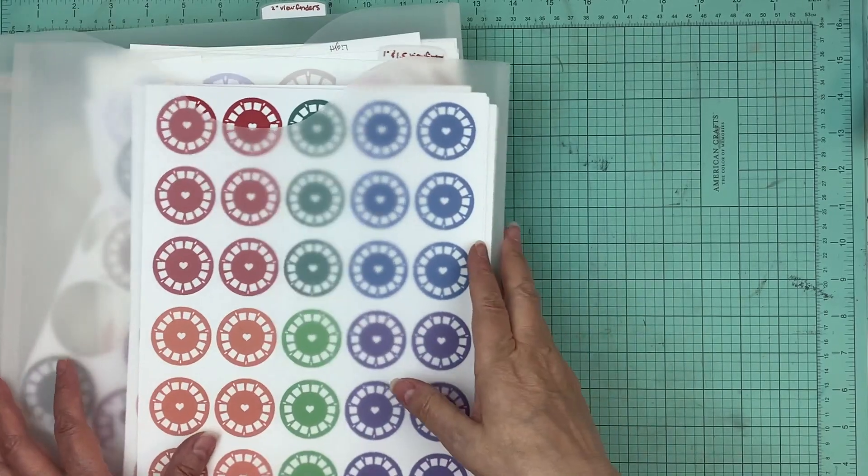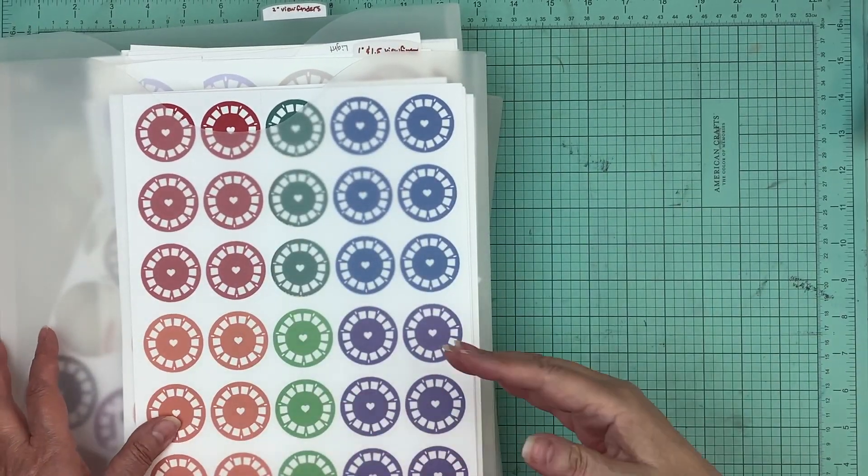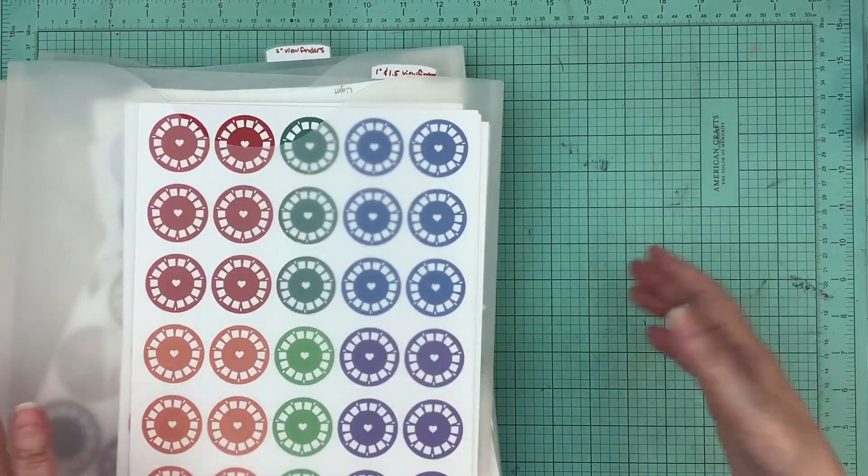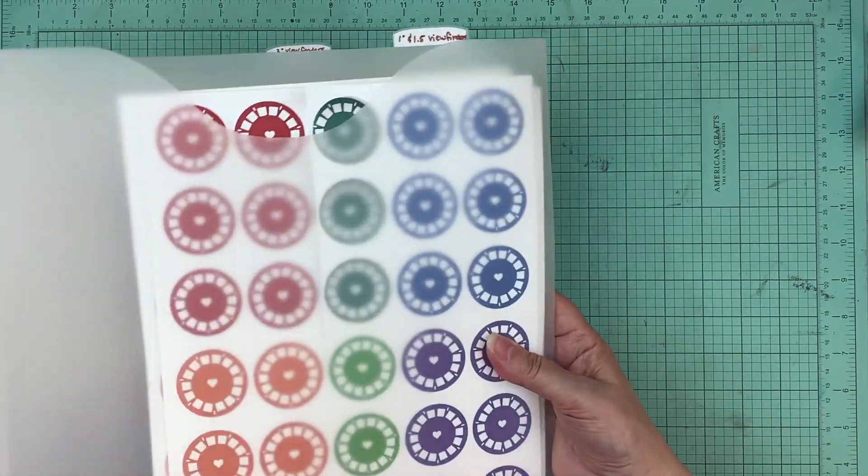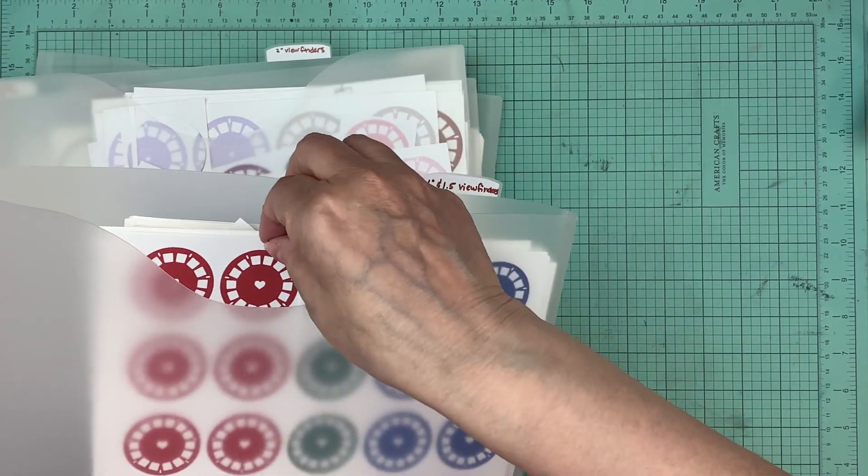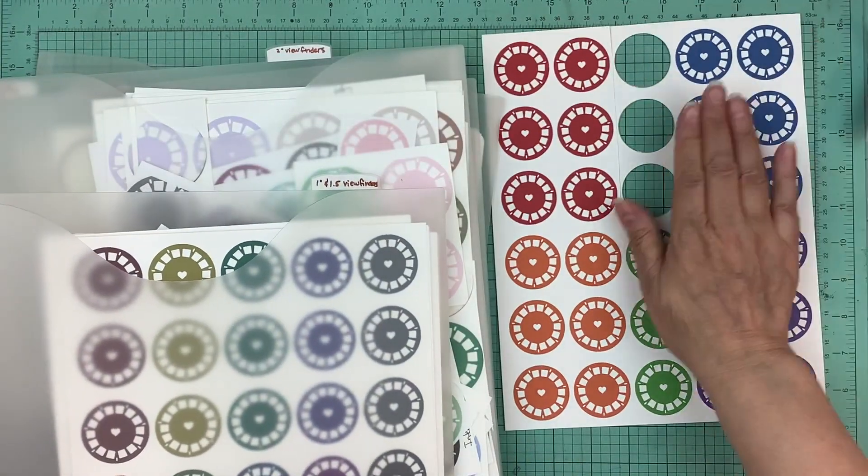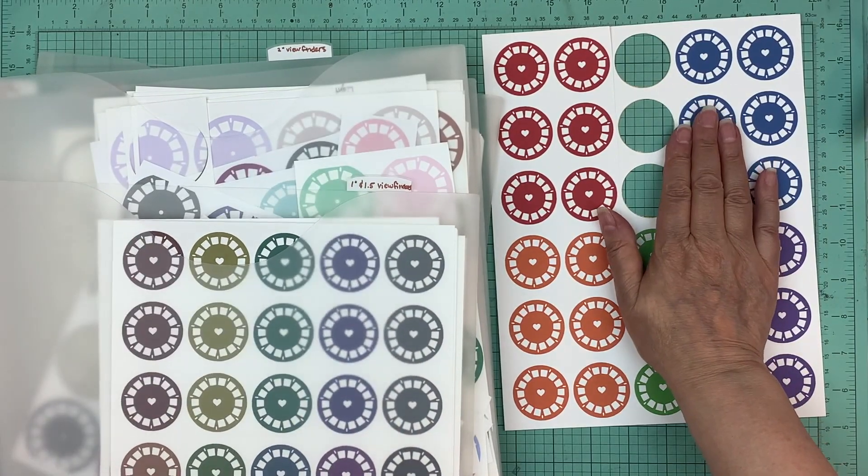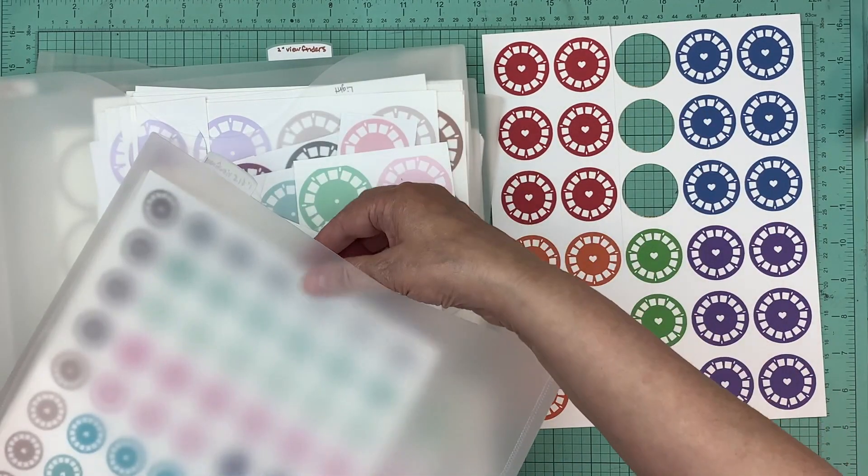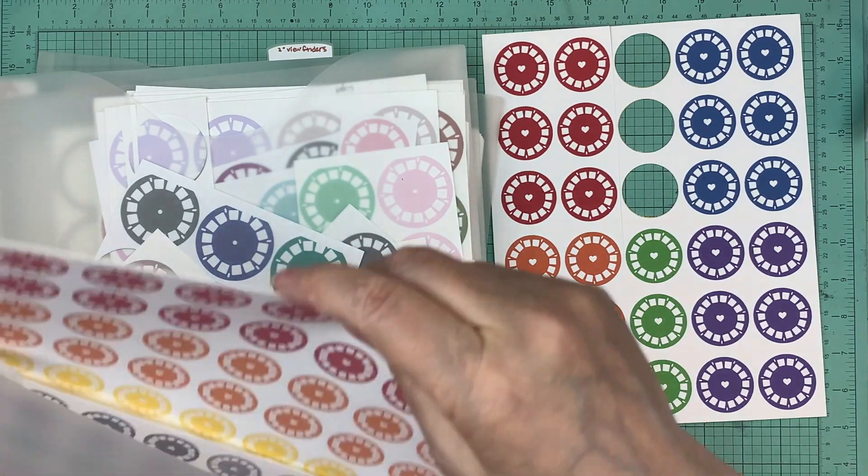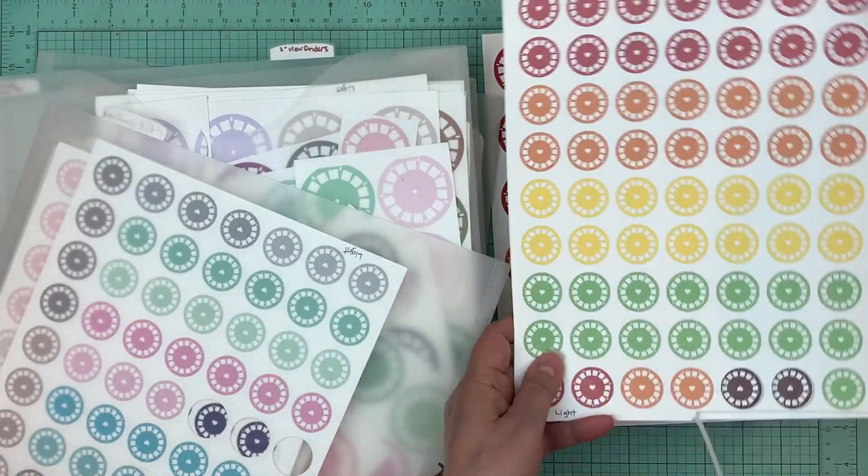So the first thing I want to do is just to show you everything, the different embellishments that we have in the shop, because it's starting to have quite a bit. So we have the, I'm just going to take a sheet of each out.